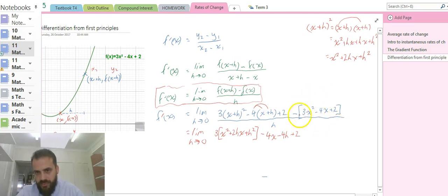And then all of this function is negative. So it's -3x², negative negative 4x so +4x, negative positive 2 so -2, all over h.